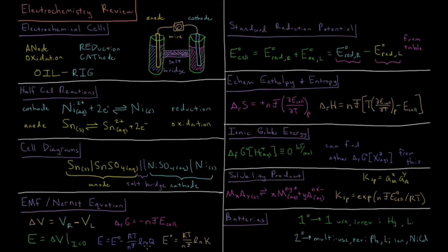We can calculate the E-naught cell, the standard EMF of the cell, from standard reduction potentials which we get from a table. The standard EMF of the cell is equal to the standard reduction potential on the right plus the standard oxidation potential on the left.